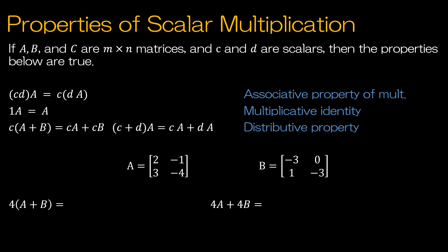Now we'll look at the properties of scalar multiplication, and again, this is specific to scalar multiplication — we're not talking about multiplying two matrices, we're talking about scalars. So C and D are scalars. This would be like 4 times 3 times matrix A is equal to 4 times 3 times matrix A — those are both scalar multiples.